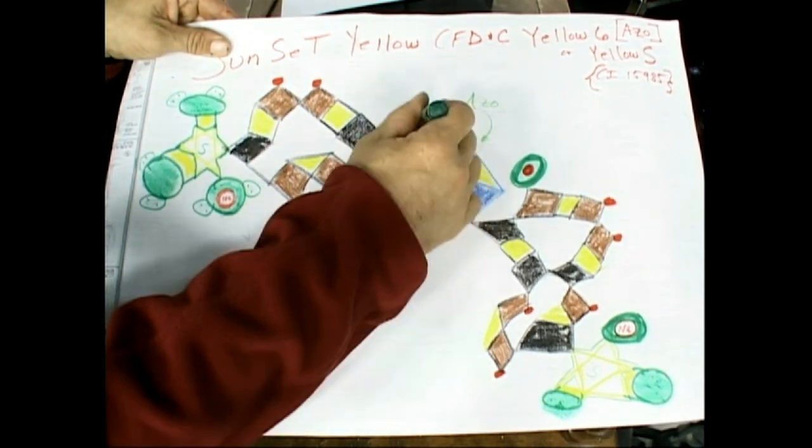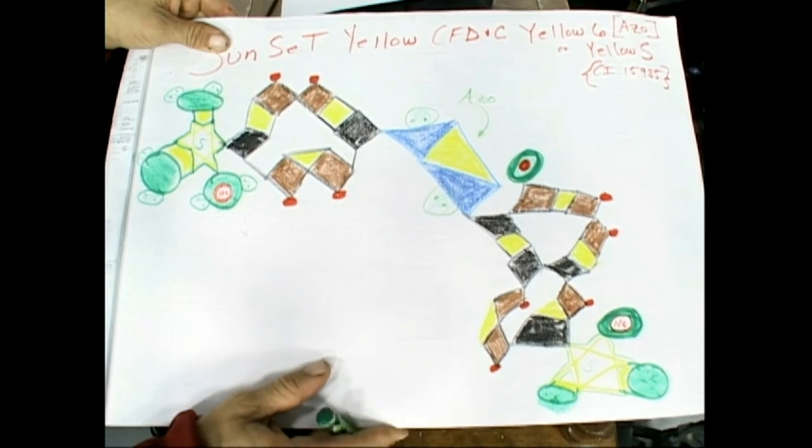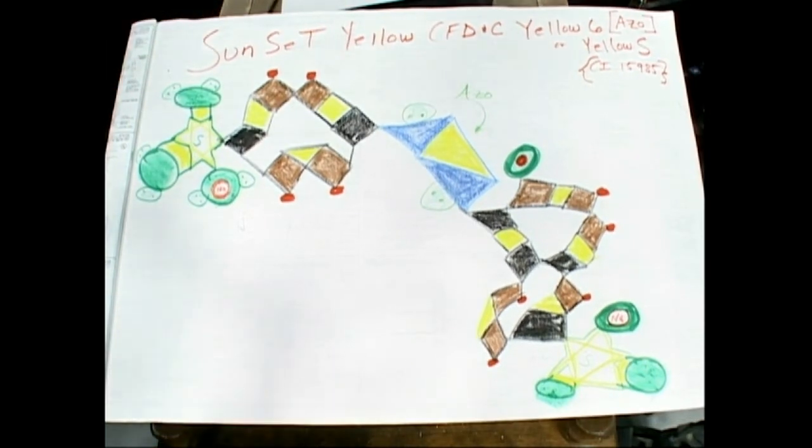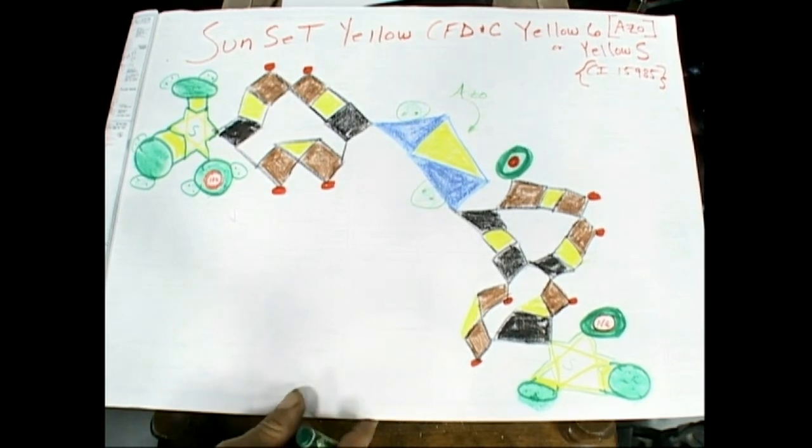Green. There you go - pretty complicated molecule, but look at the Schrödinger diamond technique, makes it child's play.